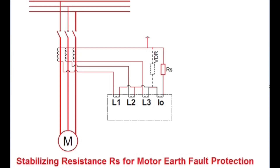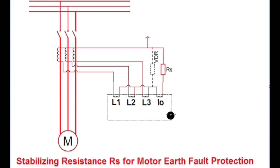Hello friends, today I will discuss how to calculate the stabilizing resistance value RS for motor earth fault protection. It is basically used for the residual earth fault connection for the three-phase motor earth fault detection.